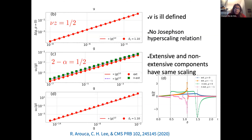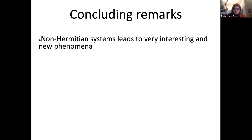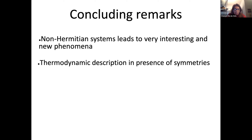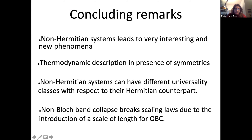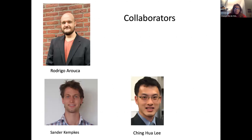Concluding remarks: non-Hermitian systems can lead to very interesting and new phenomena. We can use a thermodynamic description when we have appropriate symmetries giving a real partition function. Non-Hermitian systems have a different universality class than their Hermitian counterparts, and at the non-Bloch band collapse all scaling laws break down because a new length scale is introduced by the skin effect in open boundary conditions. This work was done primarily by Rodrigo Arouca, who is the main author on both the HOTI and non-Hermitian papers.